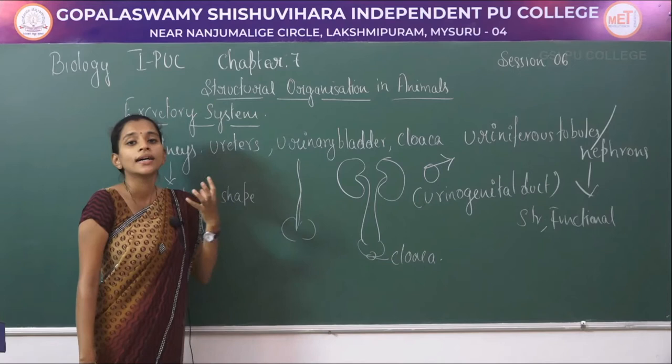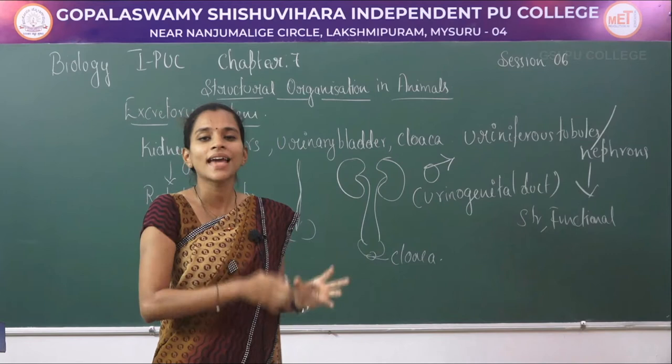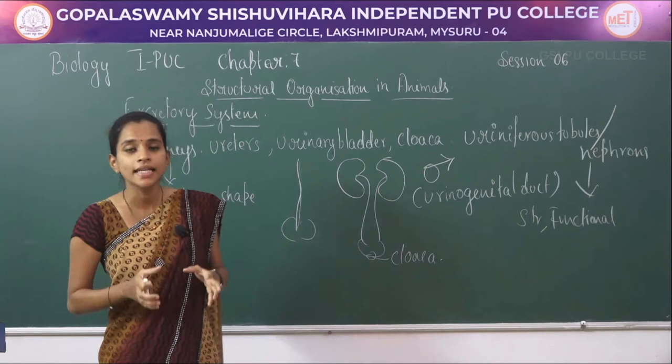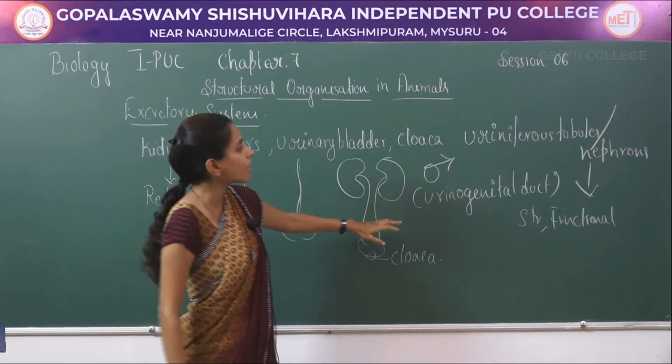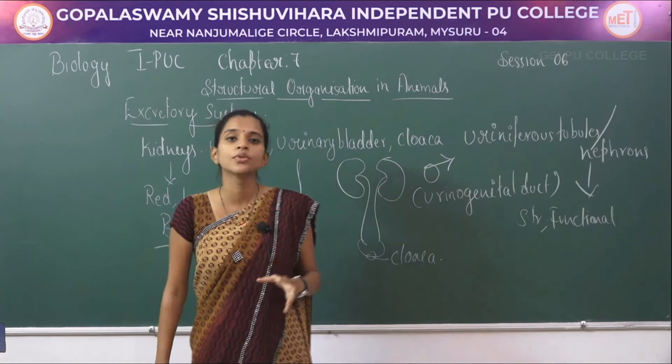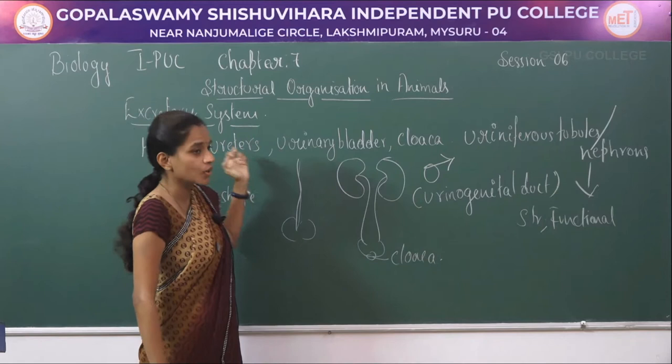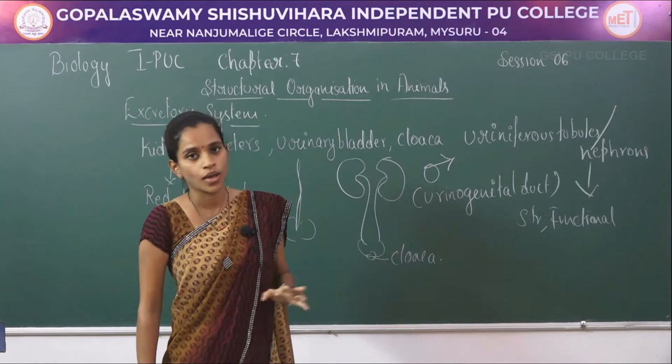The kidney excretes components from the blood. Blood carries waste substances into the kidney; the blood is returned back while waste is retained. The uriniferous tubules or nephrons separate waste from the blood, which is then transferred to the ureters, stored in the urinary bladder, and finally released from the cloaca.